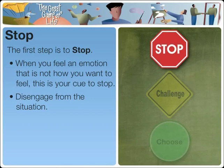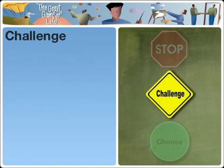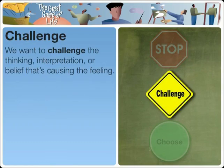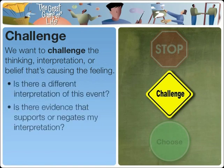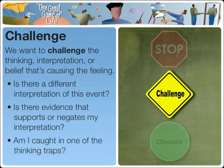Stop. The next step, the heart of the process, is Challenge. We want to challenge the thinking, interpretation, or belief that is causing the feeling. Here are some example challenge questions that we can ask ourselves: Is there a different interpretation of this event? Is there evidence that supports or negates my interpretation? Am I caught in one of the thinking traps? Thinking through the alternative interpretations, challenging irrational thinking, is the heart of the process because it creates options, and then we can move on to the final step.